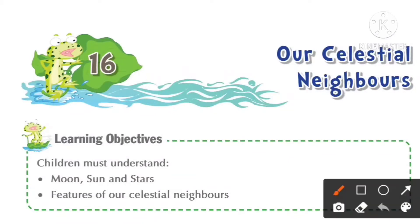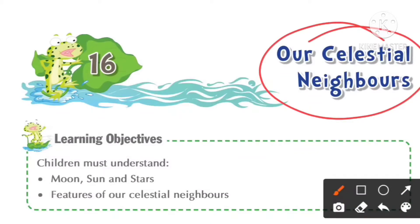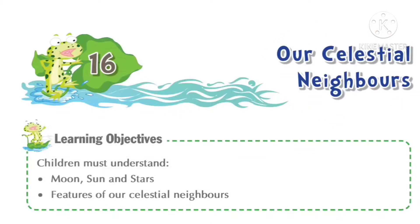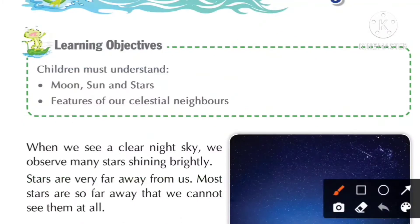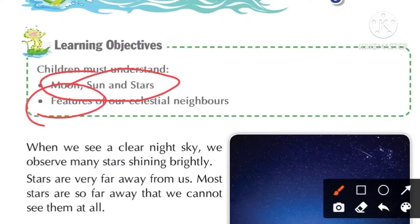What are celestial neighbors? The things we see in the sky are celestial neighbors — like the moon, sun, and stars. We will study about them and also about the features of our celestial neighbors.